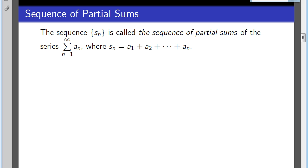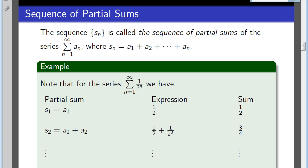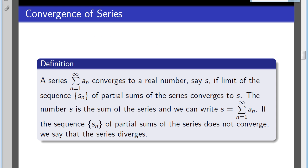We can follow this idea on an example. If we consider the series from n=1 to infinity of 1 over 2 to the power n, then we have the partial sums: s sub 1 equals a sub 1, s sub 2 equals a sub 1 plus a sub 2, and so on. We said that if this infinite sum equals a unique real number it converges, but how do we determine that? We give a definition: if the limit of the sequence of partial sums s_n converges to s, then s is called the sum of the series and we write s equals sigma a_n. If the limit of s_n does not exist, we say the series a_n diverges.